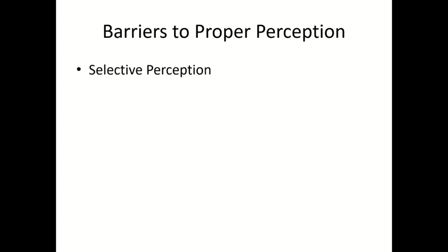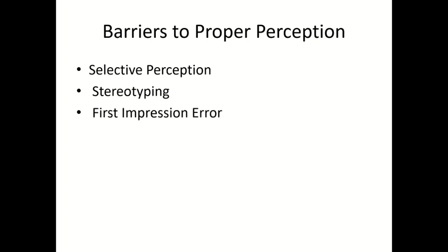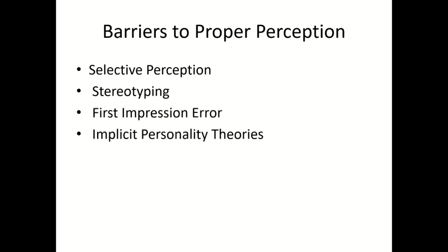Psychological needs that lead to improper perception include: selective perception, stereotyping, first impression errors about somebody, implicit personality theories, and self-fulfilling processes — where somebody predicts what is likely to happen about a person or situation.